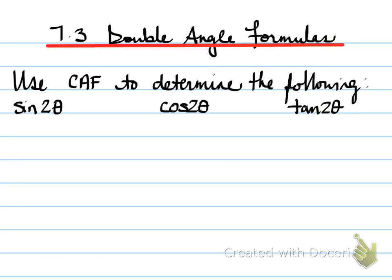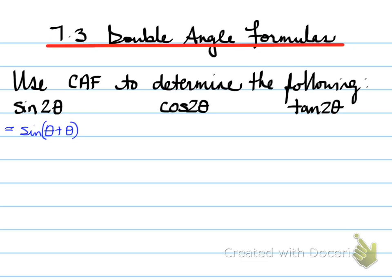Alright, 7.3 — double angle formulas. We're going to use the compound angle formula (CALF) to determine the following double angle formulas. So what is CALF? Let's look at this double angle. How do we get 2θ? 2θ is equal to sine of θ plus θ. So 2θ is 1θ plus another θ. We can now use the CALF rule to expand this out.